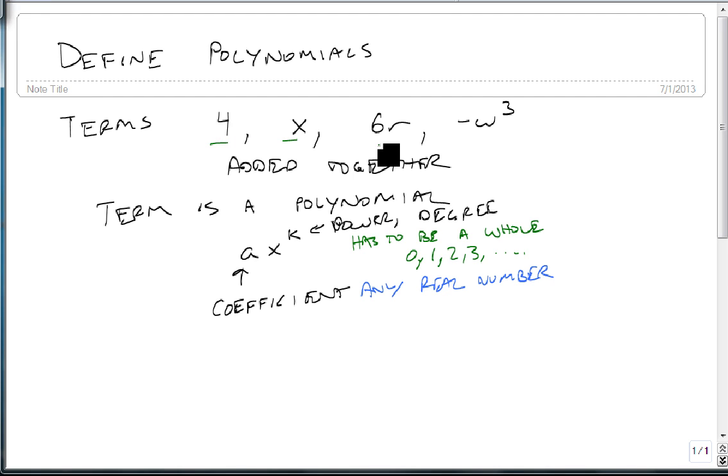So all of these are examples of single-term polynomials, otherwise called monomials. This one has a coefficient of 4 and a degree of 0. The x has a coefficient of 1. If you don't see a number in front of a variable, it's a 1, and it has a power of 1 for the same reason. 6r has a coefficient of 6 and a degree of 1. Minus w cubed has a coefficient of minus 1 and a power of 3.